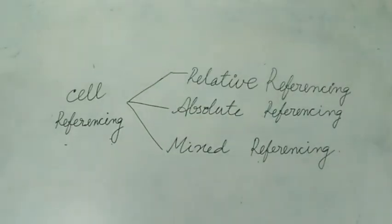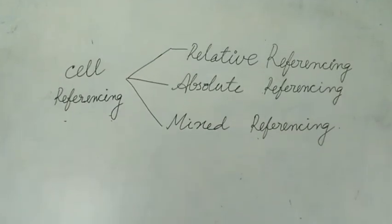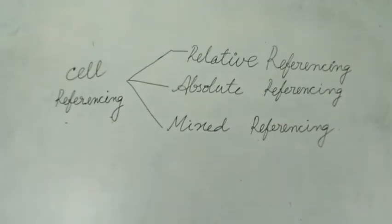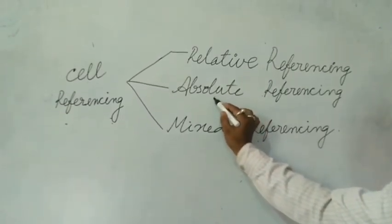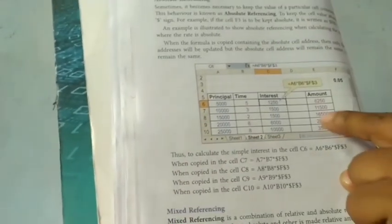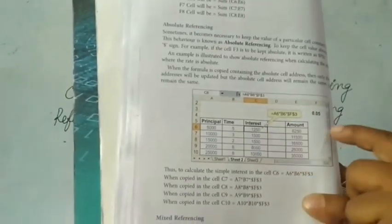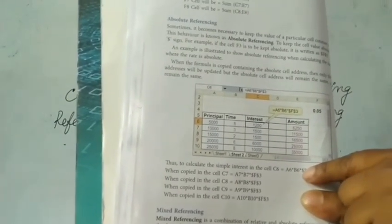Next is Absolute Referencing. In Absolute Referencing, I want to keep the cell value constant — this can be made constant by using the dollar sign ($). If you see in your book, the dollar sign is shown there. This particular value will remain constant, and when you drag it, this value will be calculated and you get the answer.